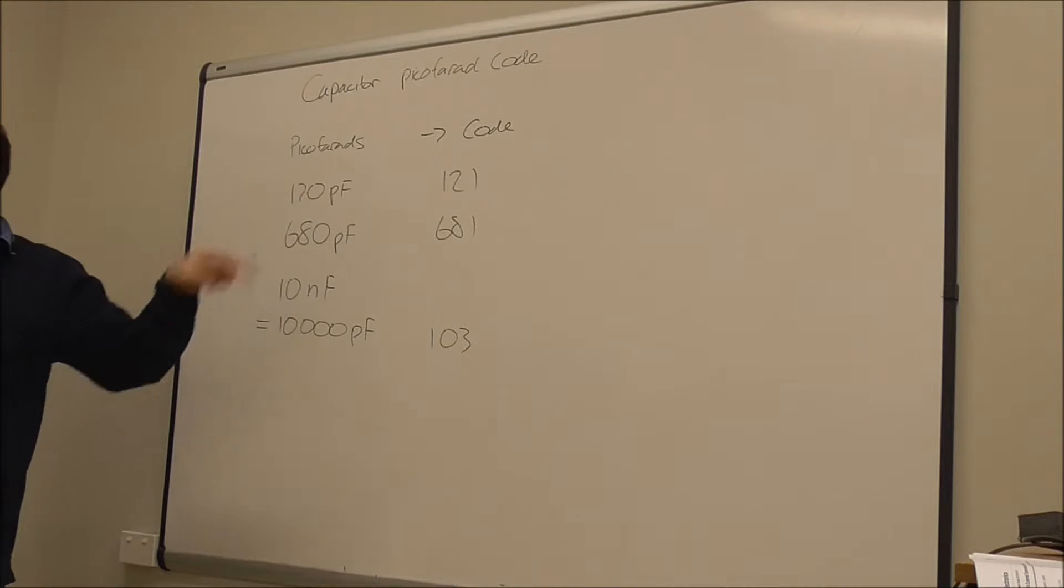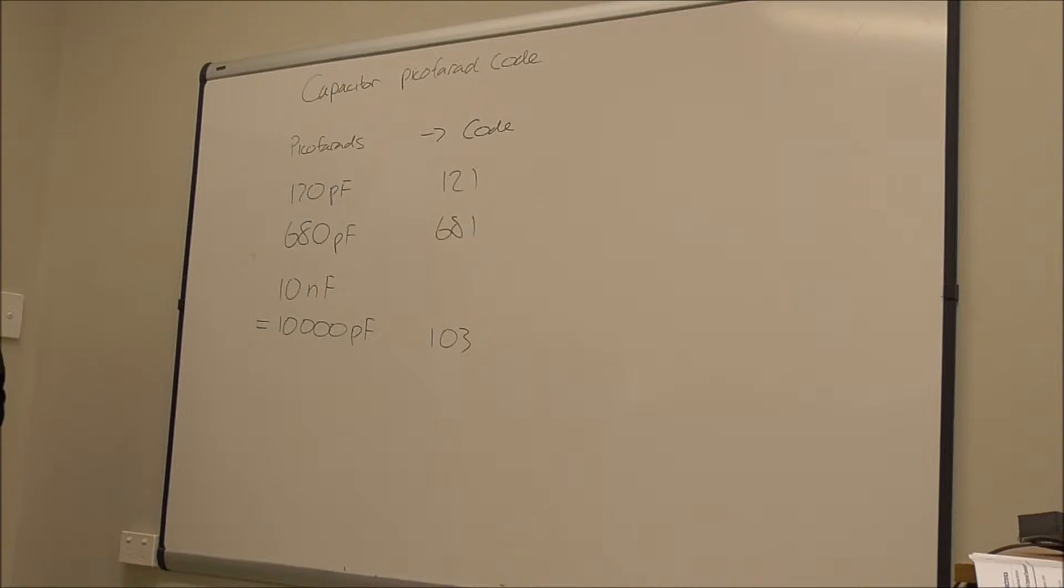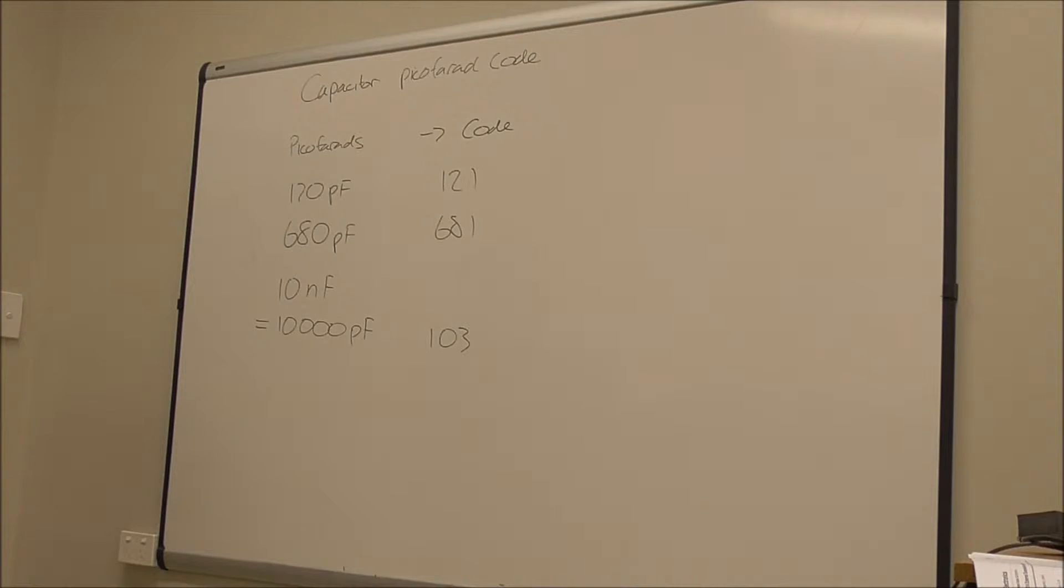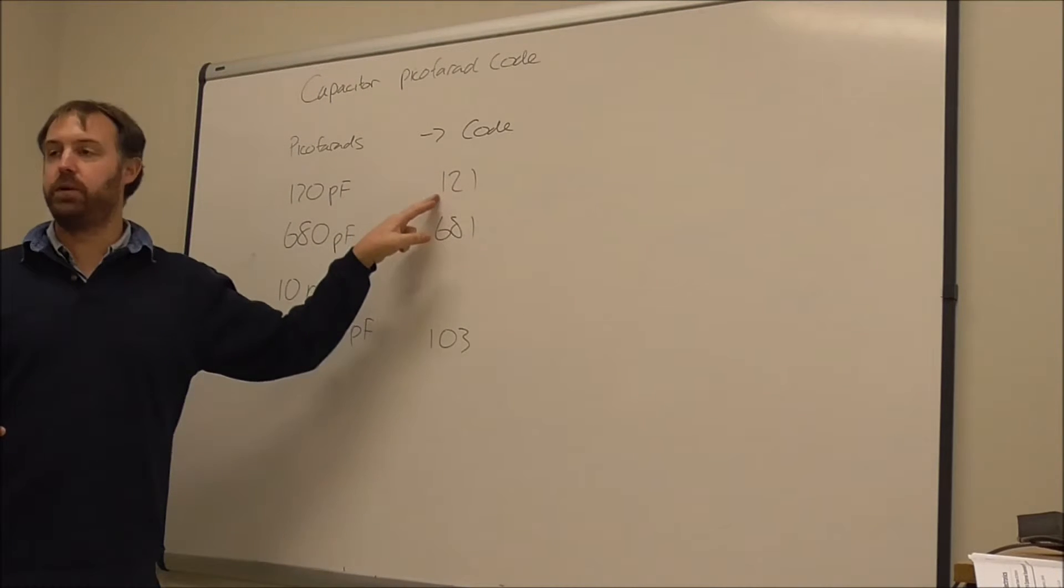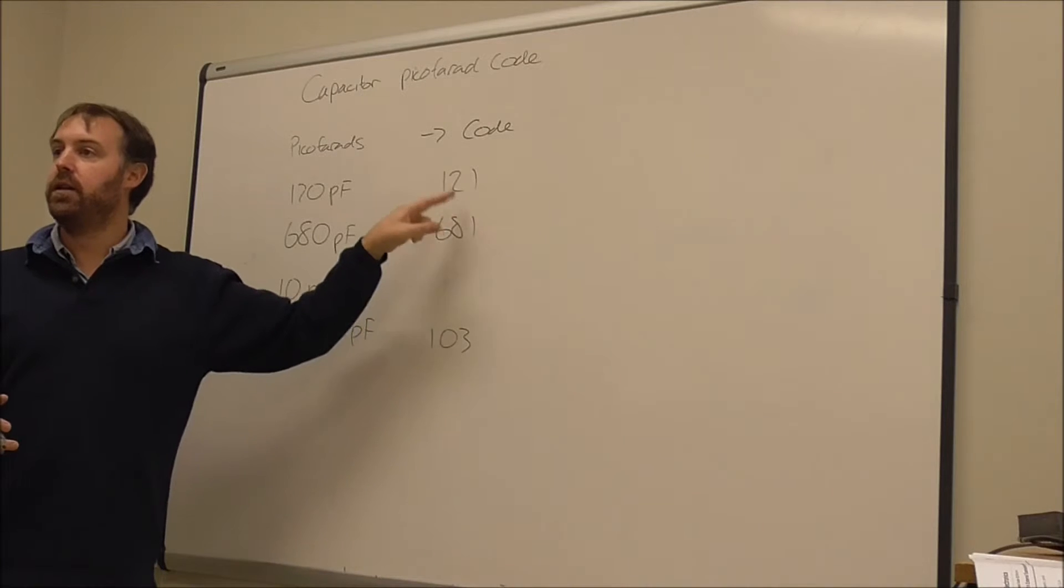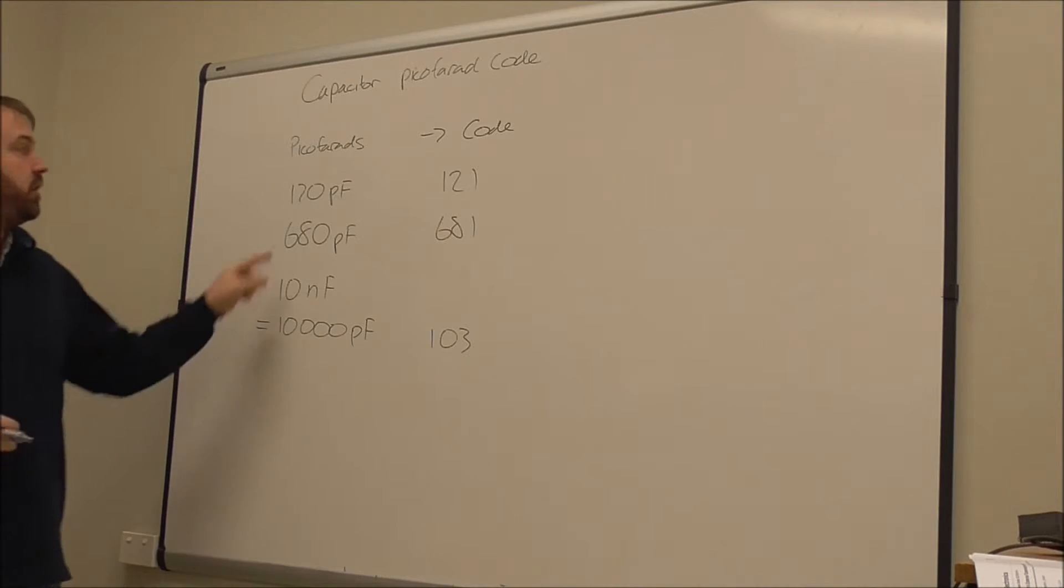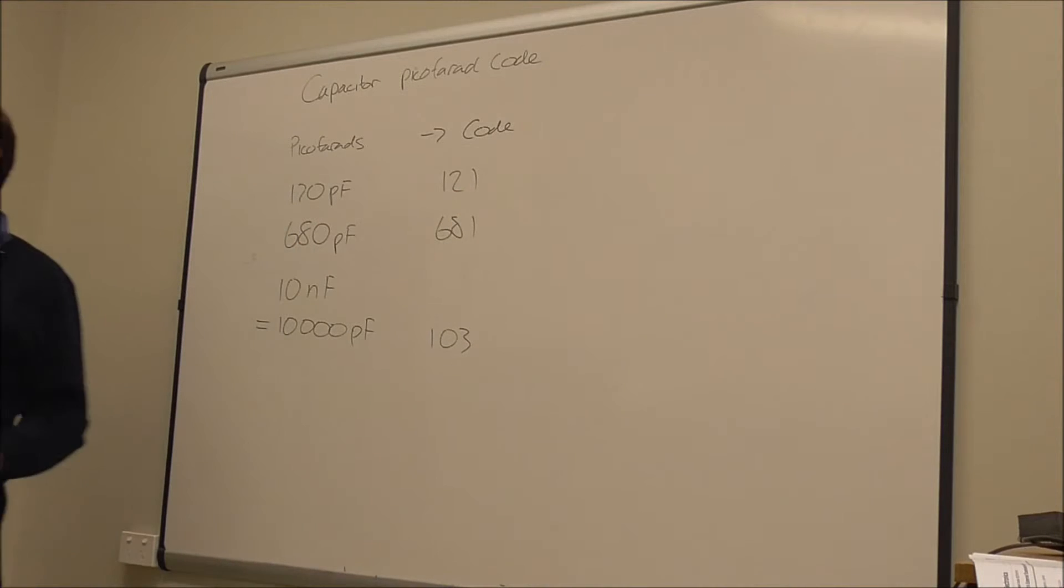And then the third colour is just the multiplier, so basically times 10 to the power of what. So if I had a 120 ohm resistor, the first two colours would be the colours that correspond to one and then two. The third colour would be the colour that corresponds with times 10, because that's what we're doing.